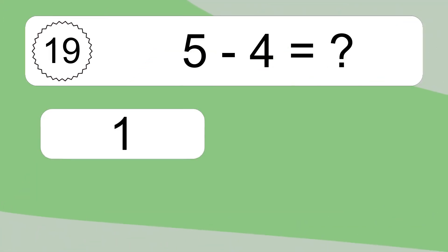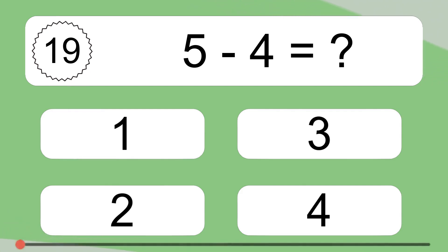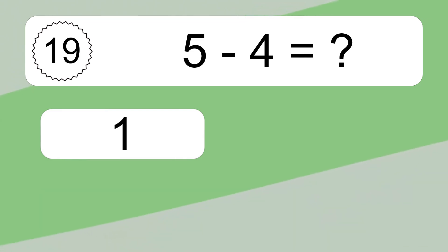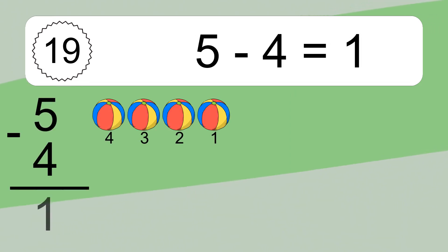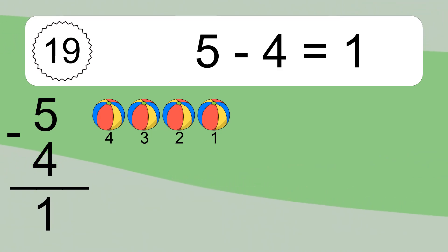5 minus 4 equals what? 5 minus 4 equals 1. Let's count it: 4, 3, 2, 1.